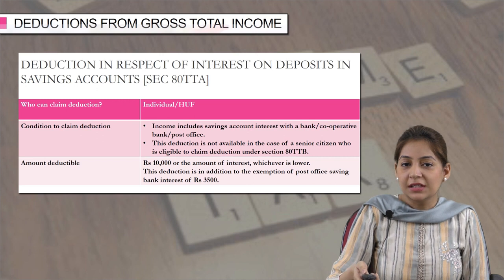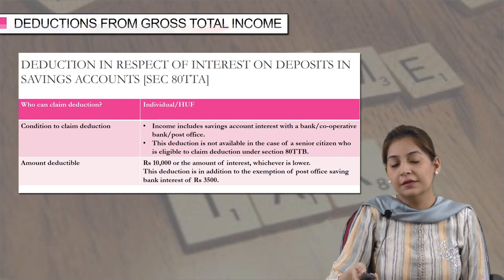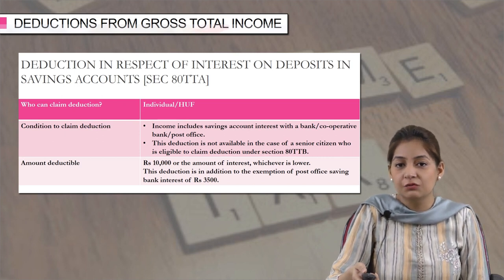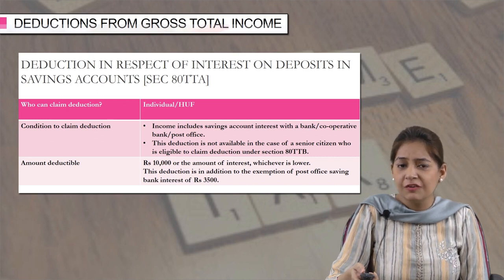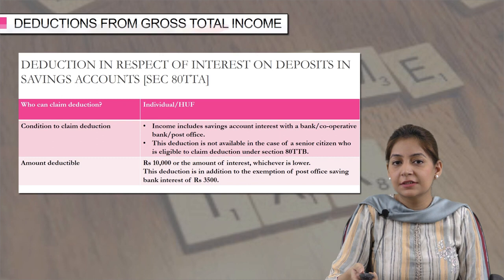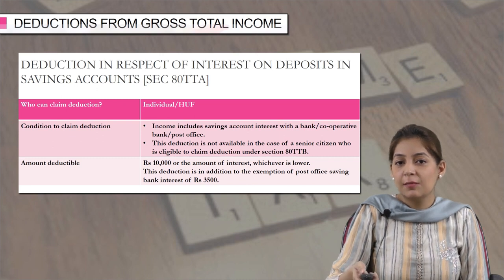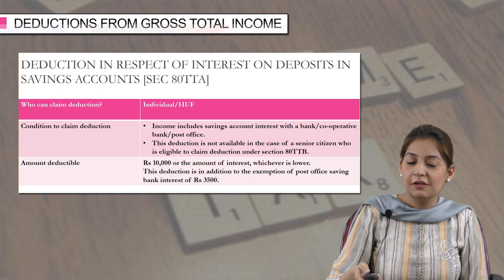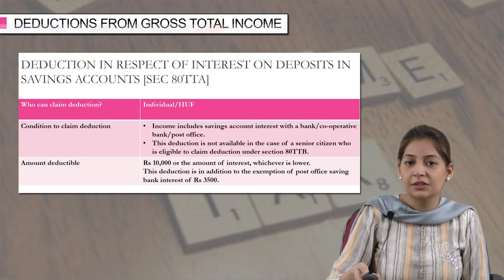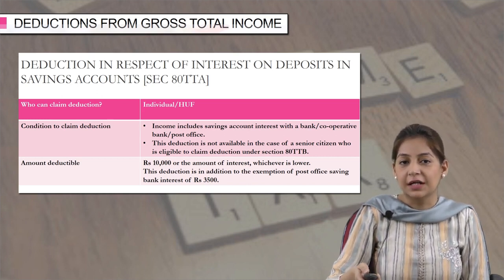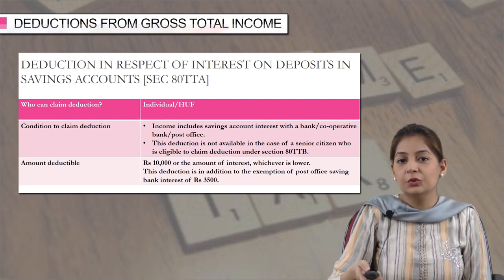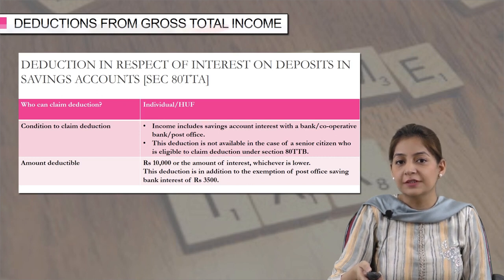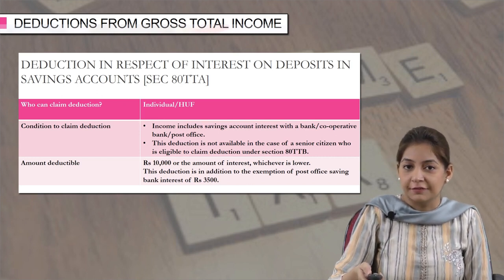How much amount is deductible? The amount deductible is the amount of your interest income or there is a ceiling of rupees 10,000, whichever is lower. For example, if your interest income is rupees 50,000, the maximum amount that can be claimed is rupees 10,000. However, if your interest income is rupees 8,000, you can claim the deduction of rupees 8,000 under this section. And this deduction is in addition to the exemption of post office savings bank interest of rupees 3,500.